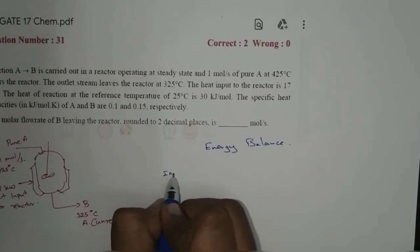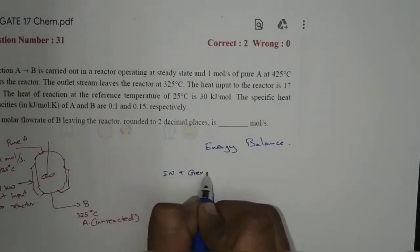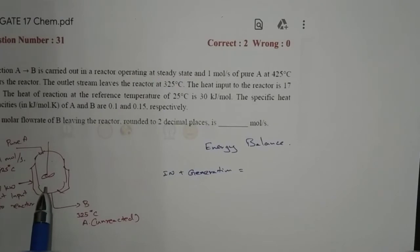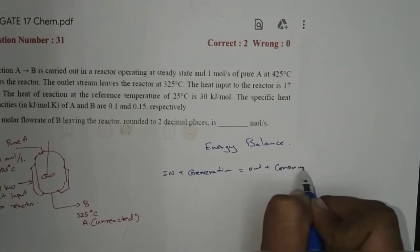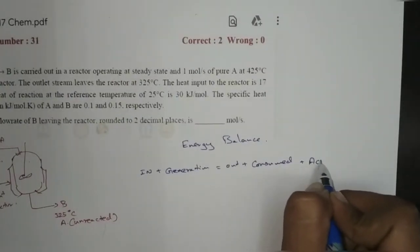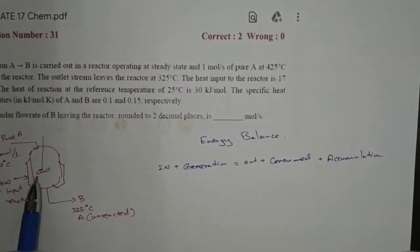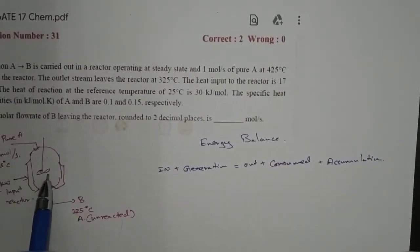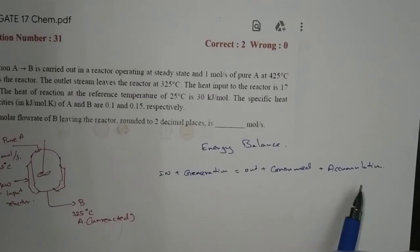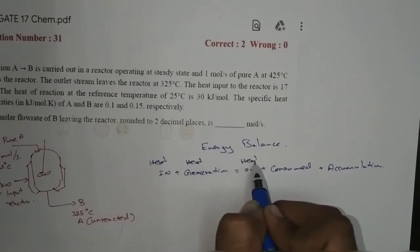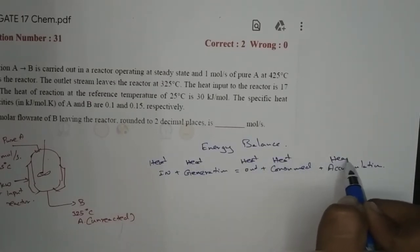The energy balance states: whatever goes in, plus heat generated, must either come out or be consumed within the reactor. So: heat in, plus heat generation, equals heat out, plus heat accumulation. In this question, we have a steady-state assumption, so heat doesn't accumulate — that term is zero.